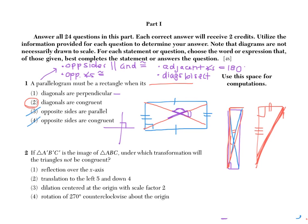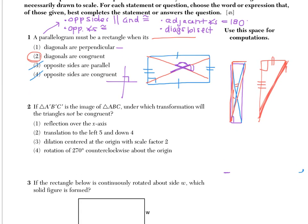Number two says if triangle A prime, B prime, C prime is the image of triangle ABC, under which transformation will the triangles not be congruent? Remember that congruent means same size, same shape. So we're looking at these transformations and trying to figure out what is happening and which one will not give us a congruent figure.